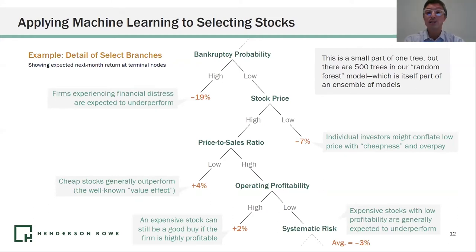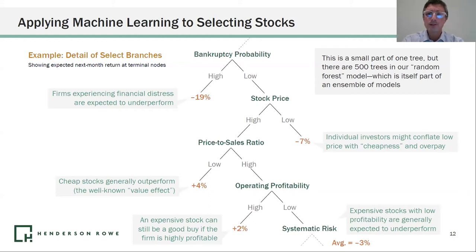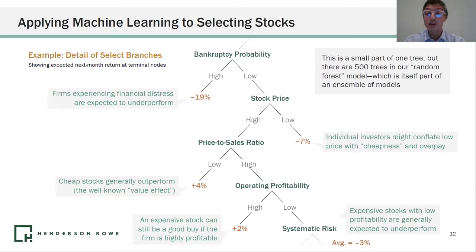So the prediction is: if the stock has a high likelihood of bankruptcy, next month's return is expected to be negative 19%. If it has a low probability of bankruptcy, we go to the next branch. The question there is: what is the stock price — the absolute dollar amount?